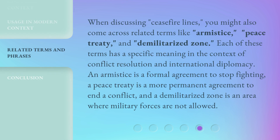When discussing Ceasefire Lines, you might also come across related terms like Armistice, Peace Treaty, and Demilitarized Zone. Each of these terms has a specific meaning in the context of conflict resolution and international diplomacy. An armistice is a formal agreement to stop fighting, a peace treaty is a more permanent agreement to end a conflict, and a demilitarized zone is an area where military forces are not allowed.